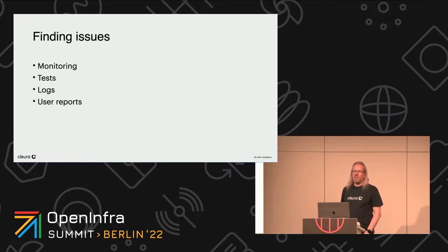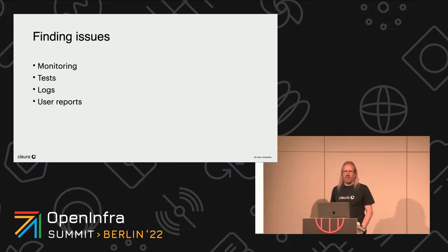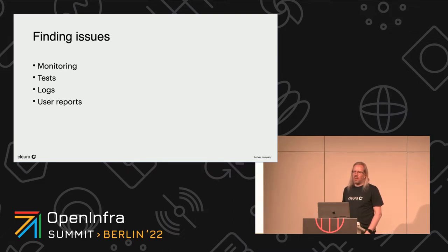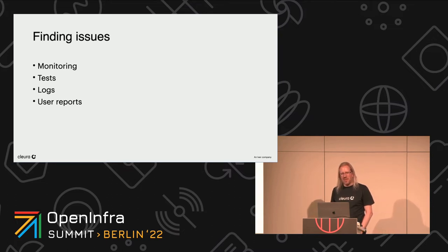How do we get reports and know there's an issue to look at? Classic monitoring — we might get an alert and someone gets woken up in the middle of the night to start troubleshooting. There are also tests during changes, such as upgrades, where we see something happen and have to act. Logs can be monitored and alerts generated from them. And user reports — we prefer to find things before users do, but sometimes we get reports from customers that something is behaving strangely or not working at all.